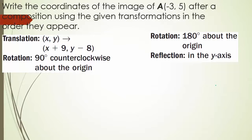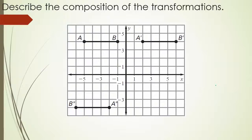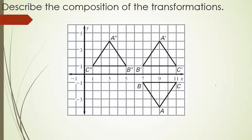Checkpoint problems 3, 4, 5, and 6 are yours. In problems 3 and 4, write the coordinates of the image of A at (-3, 5) after a composition using the given transformations in the order listed. Problem 3: translate (X+9, Y-8), then rotate 90 degrees counterclockwise about the origin. Problem 4: rotate 180 degrees about the origin, then reflect in the Y-axis. Problems 5 and 6: describe the composition of the given transformation. That's it from me — I'll see y'all soon.